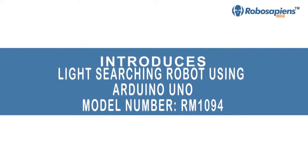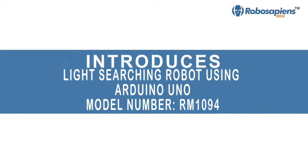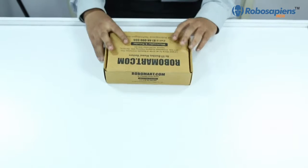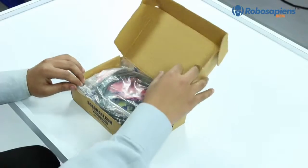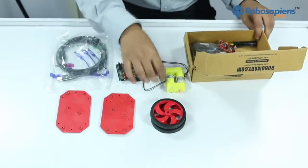Robomart introduces light searching robot using Arduino UNO model number RM1094. Hey guys, here we have a complete Robomart Arduino kit. Now let's have a look at all the components of the Arduino kit.